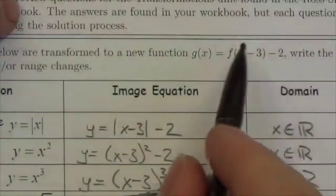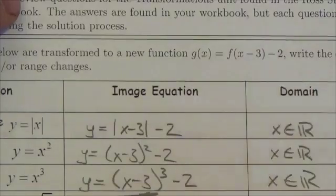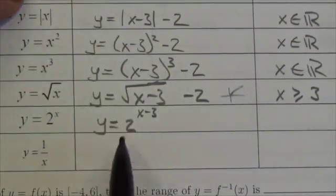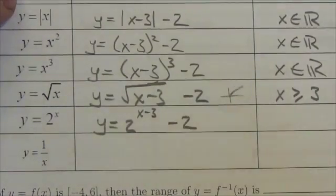Notice that in my function expression up here, I'm subtracting 2, and that is outside the function. So after I've dealt with this exponential function here, outside of this I'm going to subtract 2.